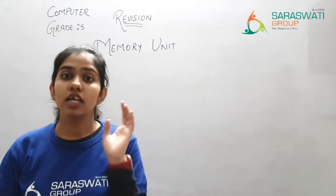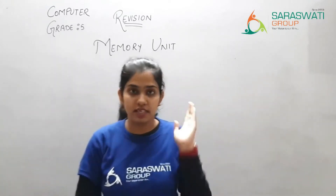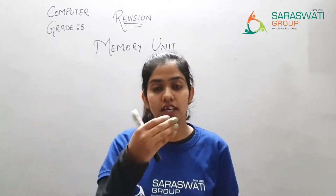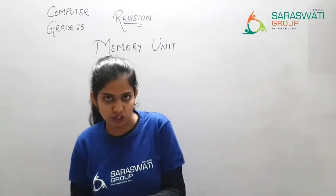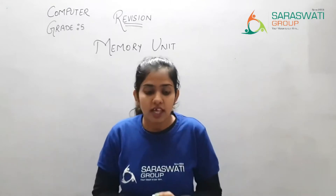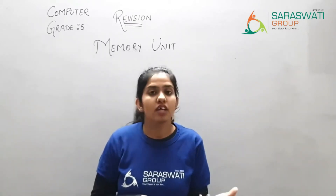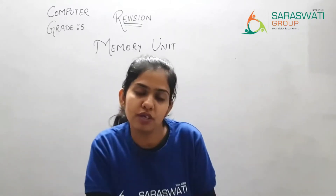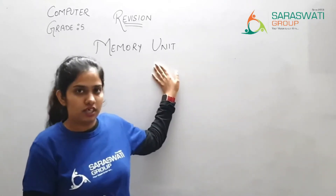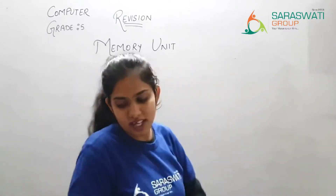A computer runs on the IPO cycle — I means input, P means processing, and O means output. So if we are inputting data into the computer, the computer will process that data in binary language and give us the output. Any information we need to store in the computer to get back later is stored in a storage device, also called the memory unit. Such a unit which can store information is known as a memory unit.